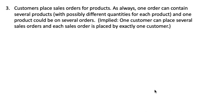The next business statement says that customers place sales orders for products. One order can contain several products — for example, five of this, six of those, eight of those — and any given product could be on several orders. It's also implied that one customer can place several sales orders, and every sales order is placed by exactly one customer.